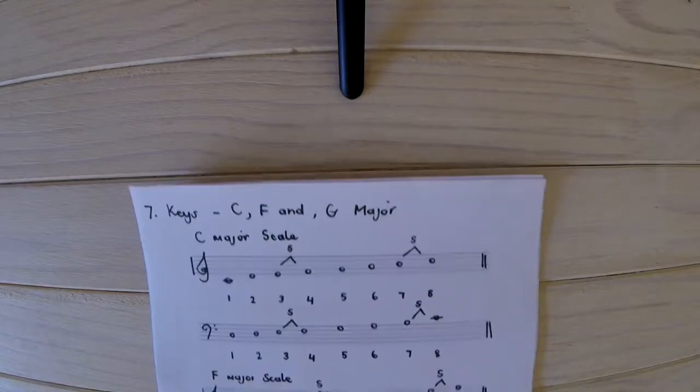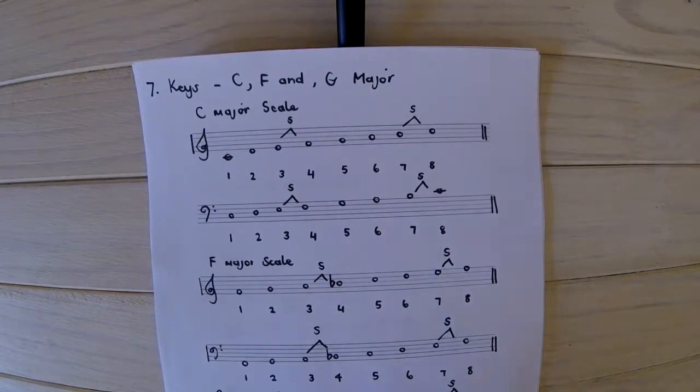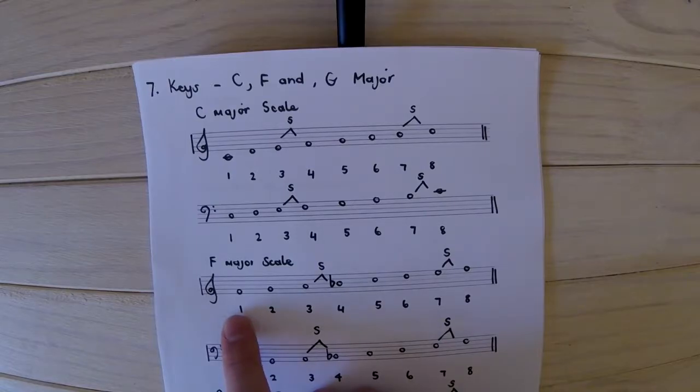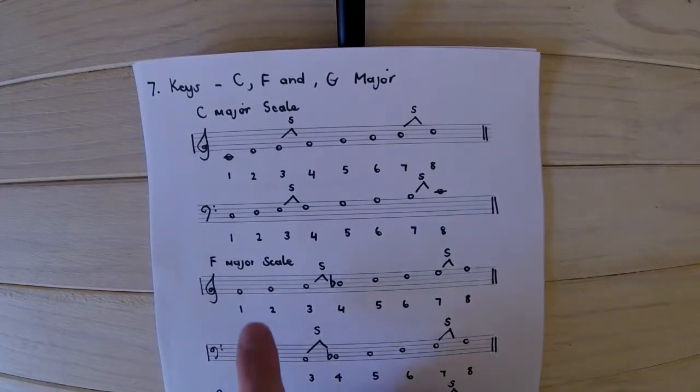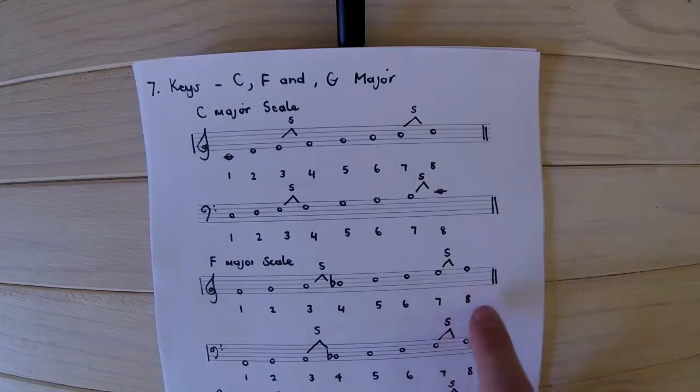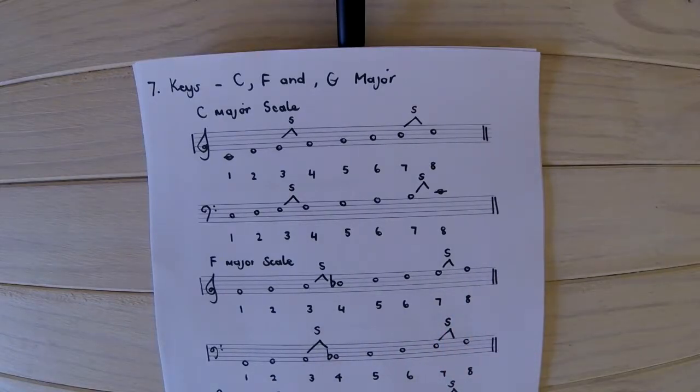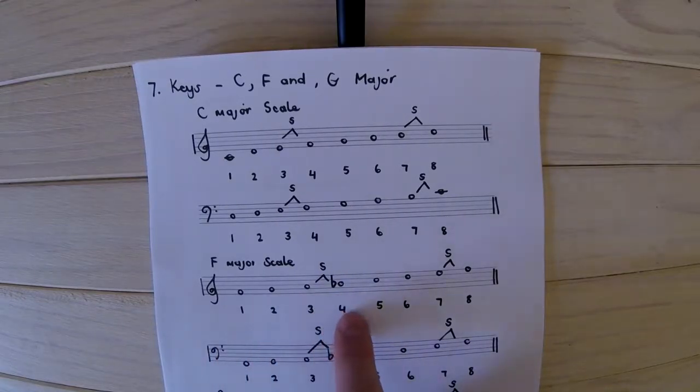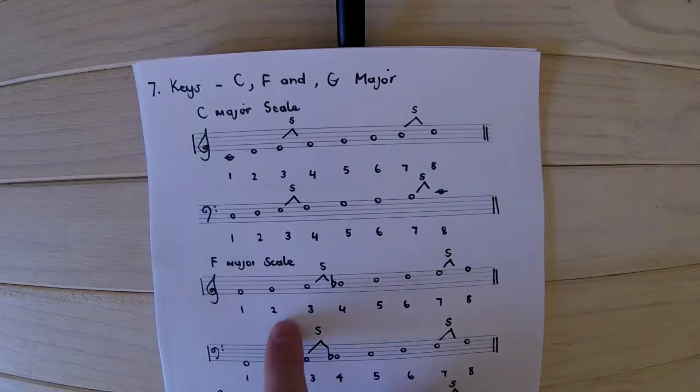For the F major scale, we have the starting point for the treble clef on F, first space, because it spells FACE for the space notes. And we go 1, 2, 3, 4, 5, 6, 7, and 8. And very important to remember that F major has one accidental. It has a B flat. And the B flat, if we count up our notes and we say our note names out loud, we will say F, G, A, B. But B will be B flat. So it will be F, G, A, B flat, C, D, E, F.